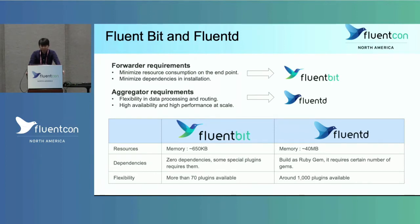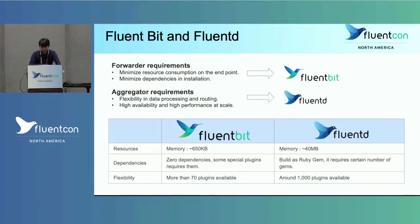As for the aggregator, it is required to perform data filtering, parsing, and routing tasks, so the aggregator needs flexibility in data processing and routing. We recommend users to use FluentD as the aggregator because with FluentD you can use thousands of plugins available in the community, and you can combine community plugins to achieve required filtering rules. Also, FluentD has a multi-worker function which enables users to achieve high availability and high performance at scale.